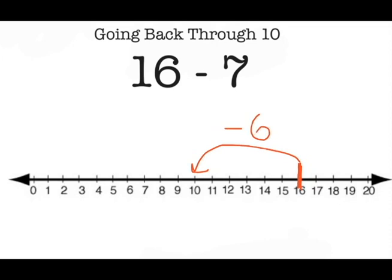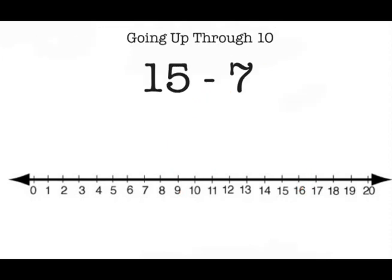So I know to get from 16 to 10, I've subtracted 6. But I also need to keep in mind that the original problem was to subtract a total of 7. I've subtracted 6 and I know that 7 is one more, so I'm going to go back one more space to subtract a total of 7 and I land on 9. So I know the final answer, my difference, is 9.